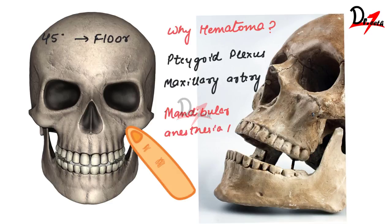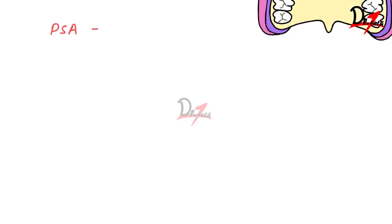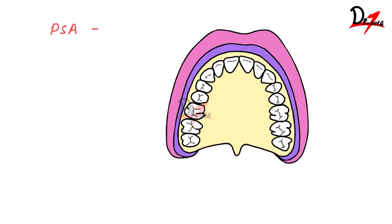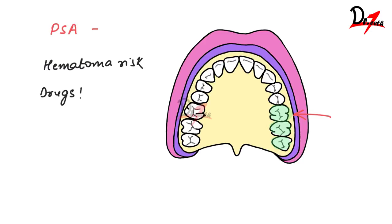To summarize: the PSA nerve block anesthetizes the pulp of the maxillary molars, except the mesiobuccal root of the maxillary first molar in 28% of cases. The buccal alveolar process of the maxillary molars and overlying structures — periosteum, connective tissue, and mucous membrane — will also be anesthetized. A contraindication is when the patient has a risk of hematoma or is taking drugs that increase bleeding; in those cases, a periodontal ligament injection or supraperiosteal injection is recommended.